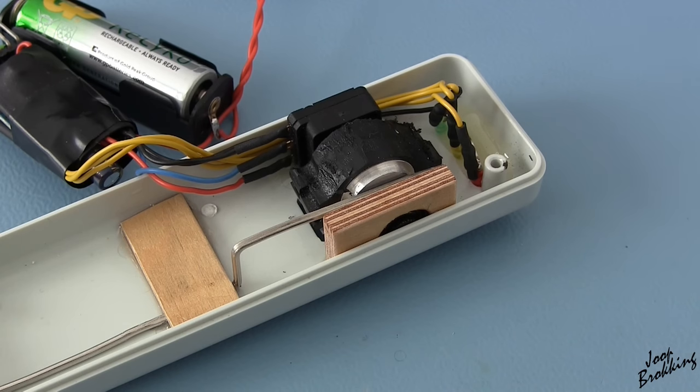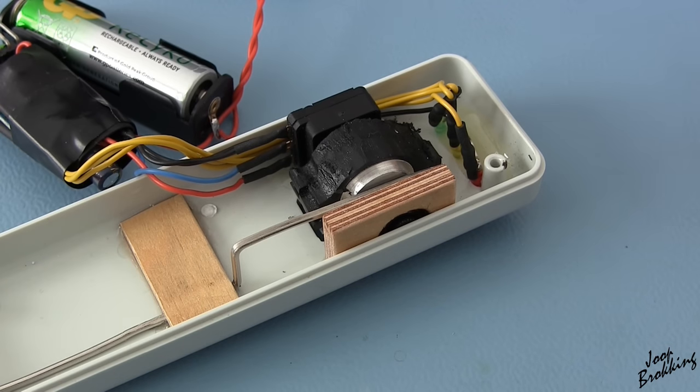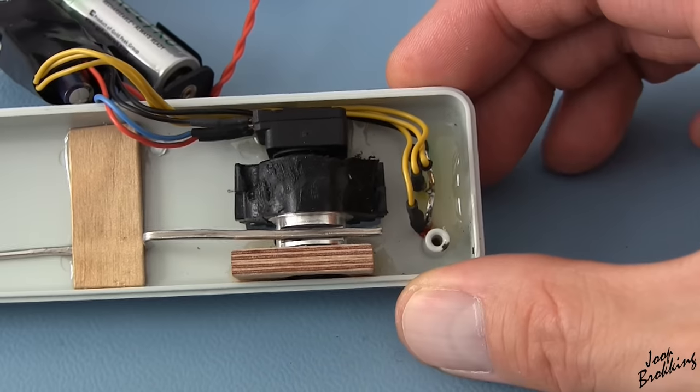When looking at the potentiometer you probably understand why this was the most time-consuming part. Connecting a potentiometer to the Arduino is simple. Connect the outer pins to ground and plus 5 volts and connect the wiper to an analog input. Getting it to work mechanically was the hard part.